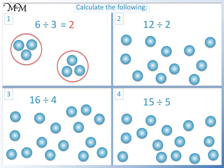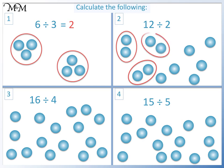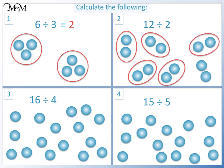Question 2: 12 divided by 2. We are dividing into groups of 2. So we have 1, 2, 3, 4, 5, 6 groups of 2. So 12 divided by 2 equals 6.